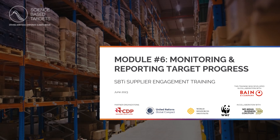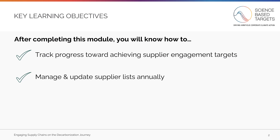Hello, and welcome to the SBTi's training on supplier engagement. This session covers Module 6: Monitoring and Reporting Target Progress. After completing this module, you will know how to track progress towards achieving supplier engagement targets and manage and update supplier lists annually.